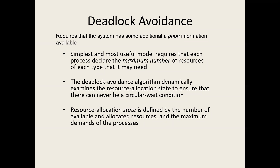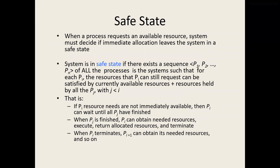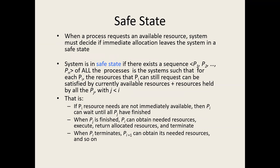A safe state means a sequence exists where all processes execute without going into a deadlock. There can be n processes in a given situation. If we can find at least one safe state, there are no deadlocks. But if we cannot find any safe state at all, then there is a deadlock.